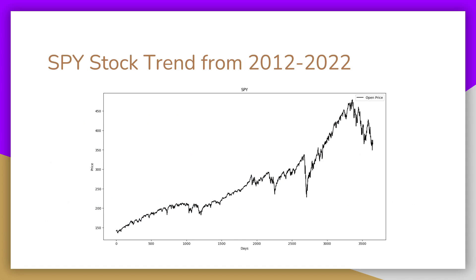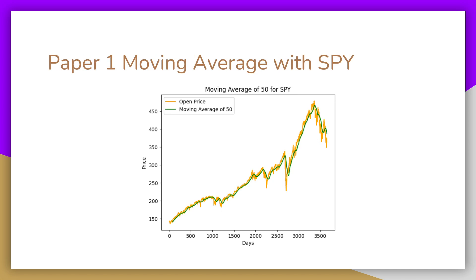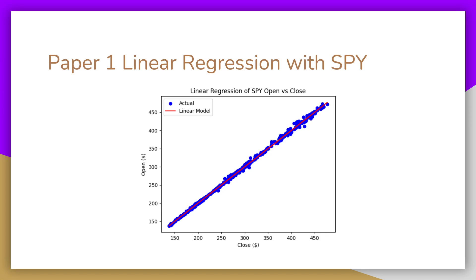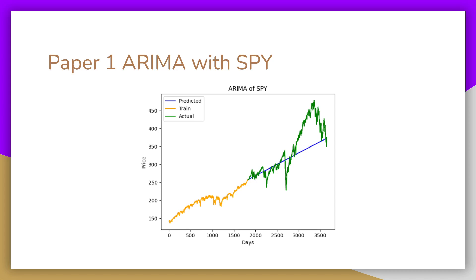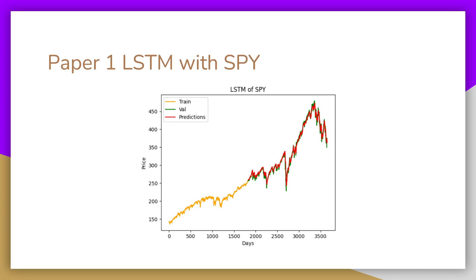For our SPY stock, this goes from 2012 to 2022, and this is what we used to calculate our models for Paper 1. For the moving average with a window size of 50, you can see it here. This is our linear regression — again, closed versus open using a scatter plot. This is our ARIMA with SPY, where we split the data in half and the blue line is the predicted. And this is our LSTM.